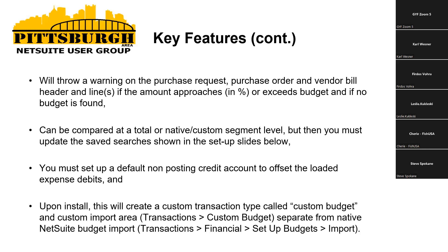This is a piece that isn't really called out very well in the installation instructions: if you're using the custom budget process, you want to explode your expenses — only expenses or debits. So you need to create a non-posting credit account to offset those loaded expense debits. Then upon install, it's going to create a custom transaction type in the background called Custom Budget. For anybody familiar with going into your transaction table and the different transaction types, you're going to see a new type called Custom Budget, and also a new custom import area.